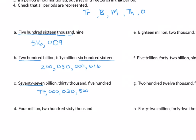Example d: four million, two hundred sixty thousand. Four million gives us four, comma. After millions comes thousands, and we have 260 — that translates to 2-6-0, comma. There is nothing after the thousands period, but we still need to represent the ones period, so we add three zeros. The result is 4,260,000.